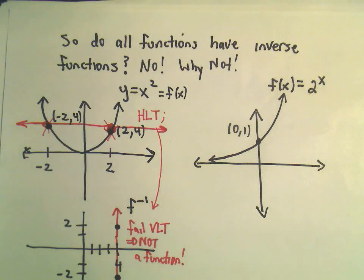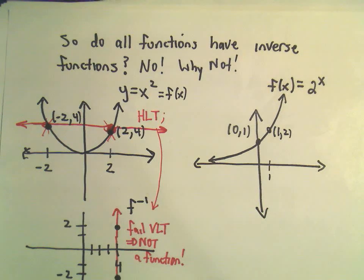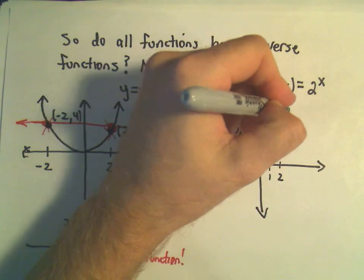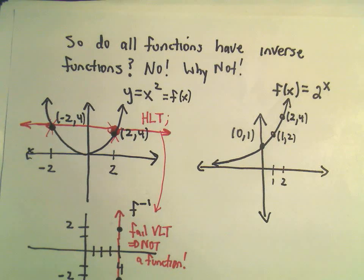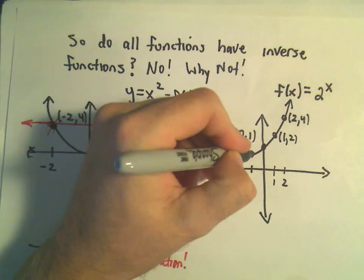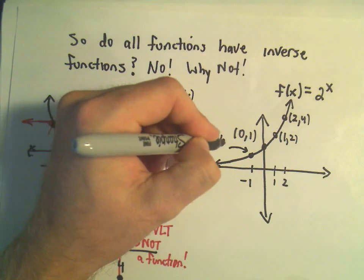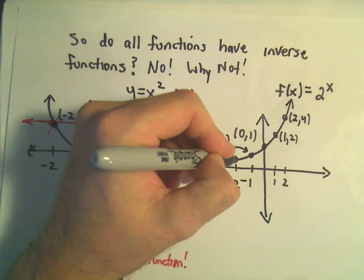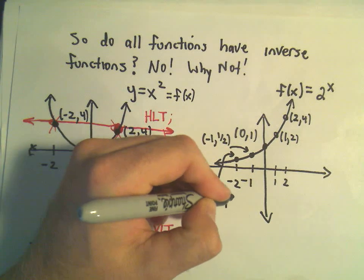Notice a couple things. If you plug in 0, 2 to the 0 is 1. If we plug in x equals 1, we would get the point (1, 2). If we were to plug in 2, we would get (2, 4), etc. You could plug in some more points. If we plug in negative 2, you'll actually get the y value of one fourth.